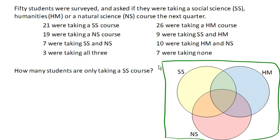Let's start with the most specific piece of information here. We know that three students were taking all three courses, so in our inner middle intersection containing all three sets, we have three people. We also have seven outside of all three sets, and we'll go ahead and mark that in.